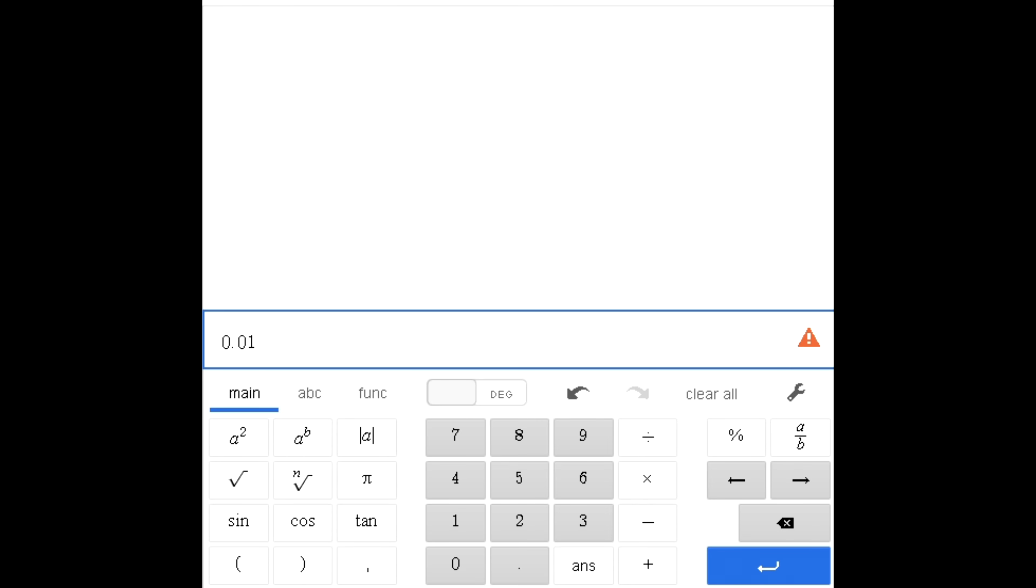Okay, so let's see 0.01 raised to 0.01. And we can see 0.95. What happens if I increase this with one decimal place? I see 0.99.